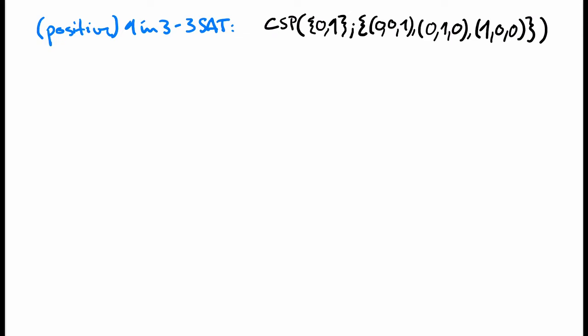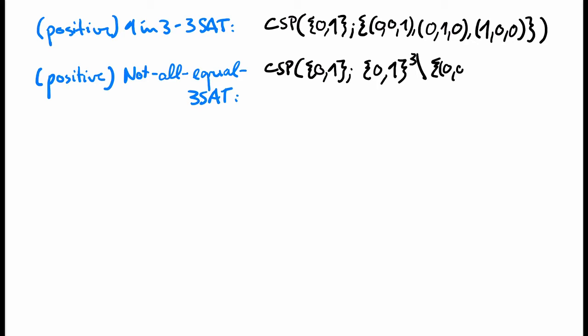The not-all-equal 3-SAT problem again has just a single ternary relation which contains all triples except for the all-1 and the all-0 tuple. So here the task is to find an assignment that does not map all the variables of a constraint to the same value. Both 1-in-3 3-SAT and not-all-equal 3-SAT are NP-complete problems.